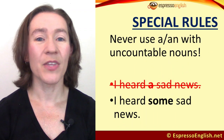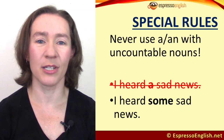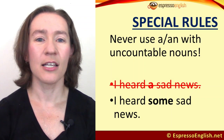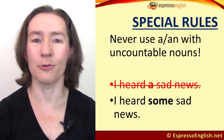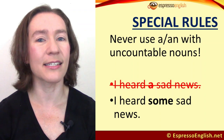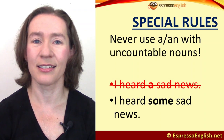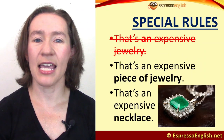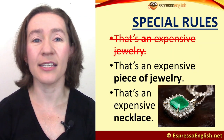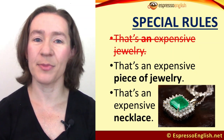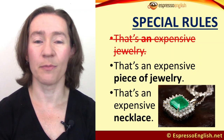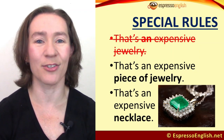The second rule is: we never use 'a' or 'an' with uncountable nouns. Instead, you can use 'some' or 'a piece of.' So don't say 'I heard a sad news' — news is uncountable, so we can't use 'a.' Instead say 'I heard some sad news.' Don't say 'that's an expensive jewelry.' Instead say 'that's an expensive piece of jewelry,' or be more specific: 'that's an expensive necklace.' Necklace is countable, but jewelry as the category is uncountable.